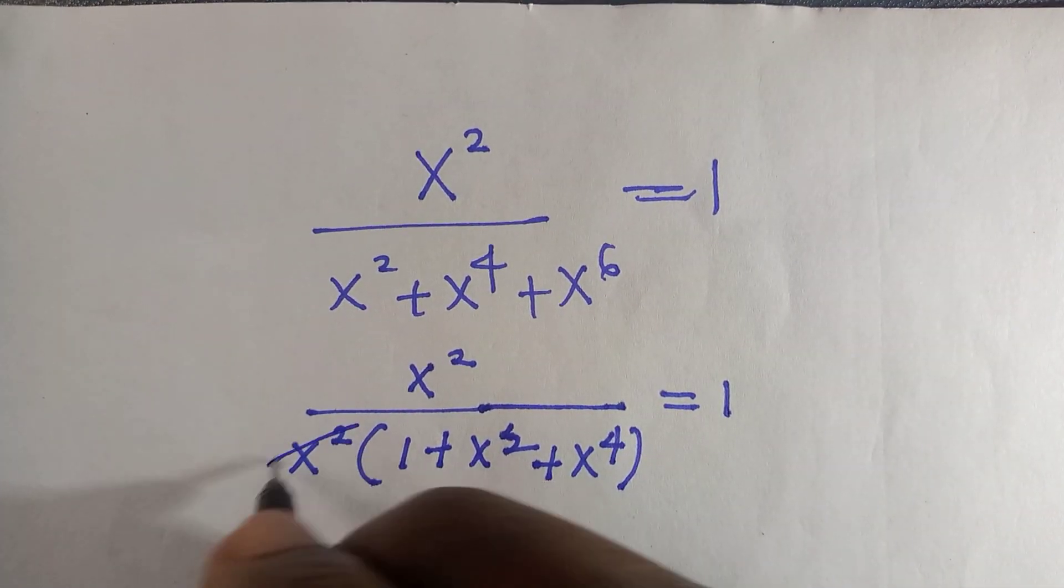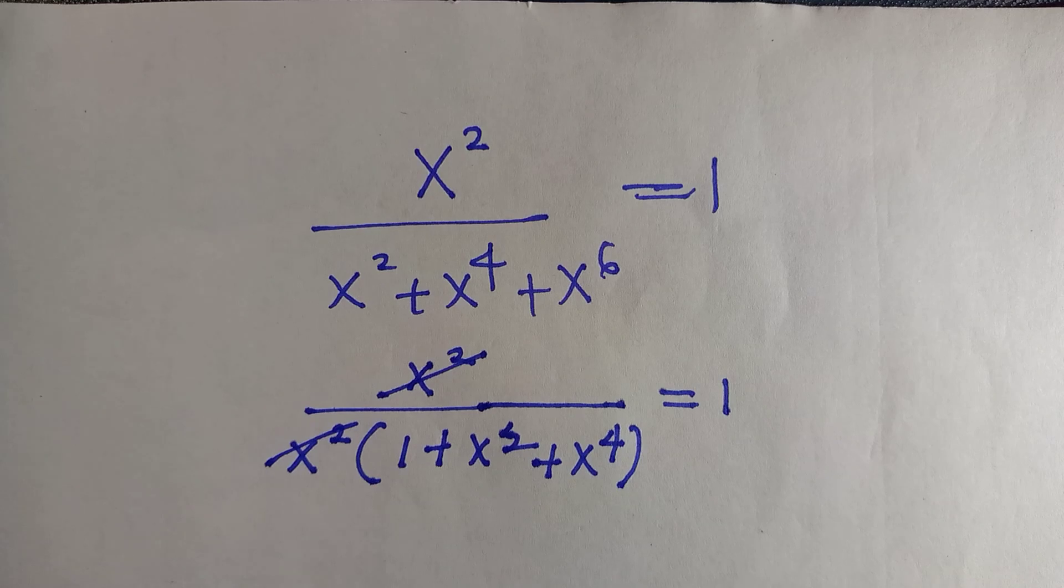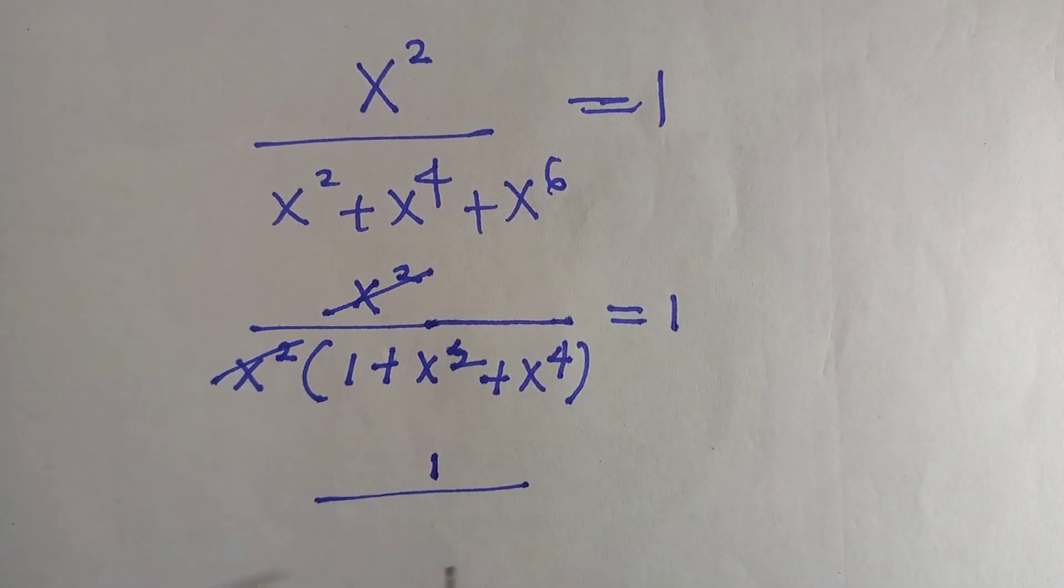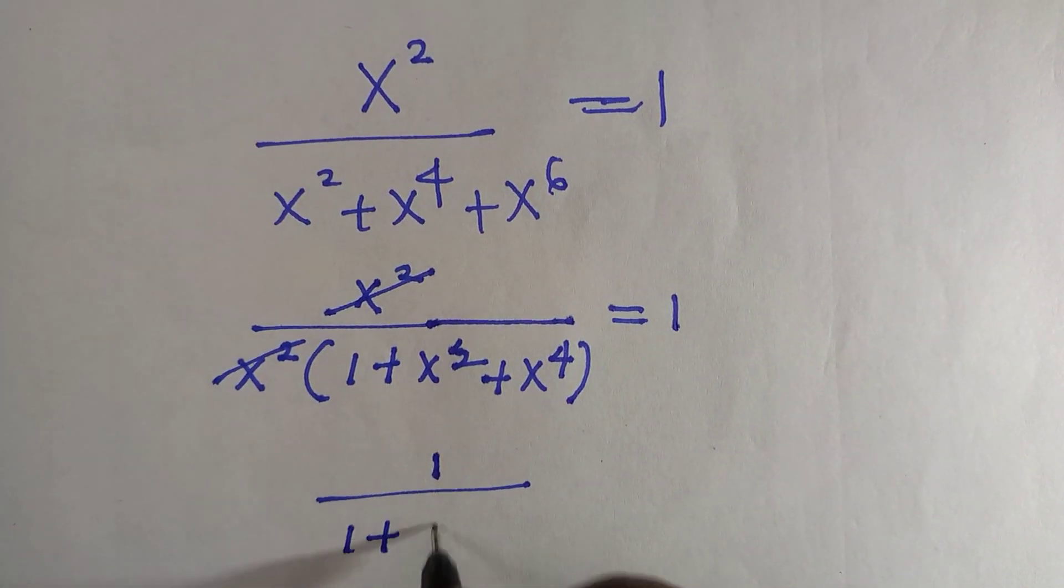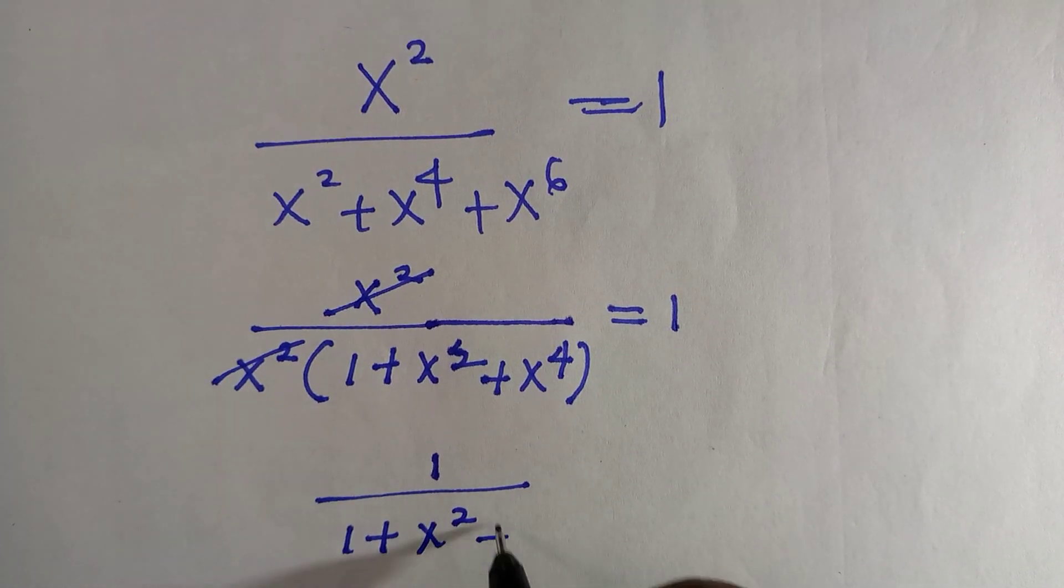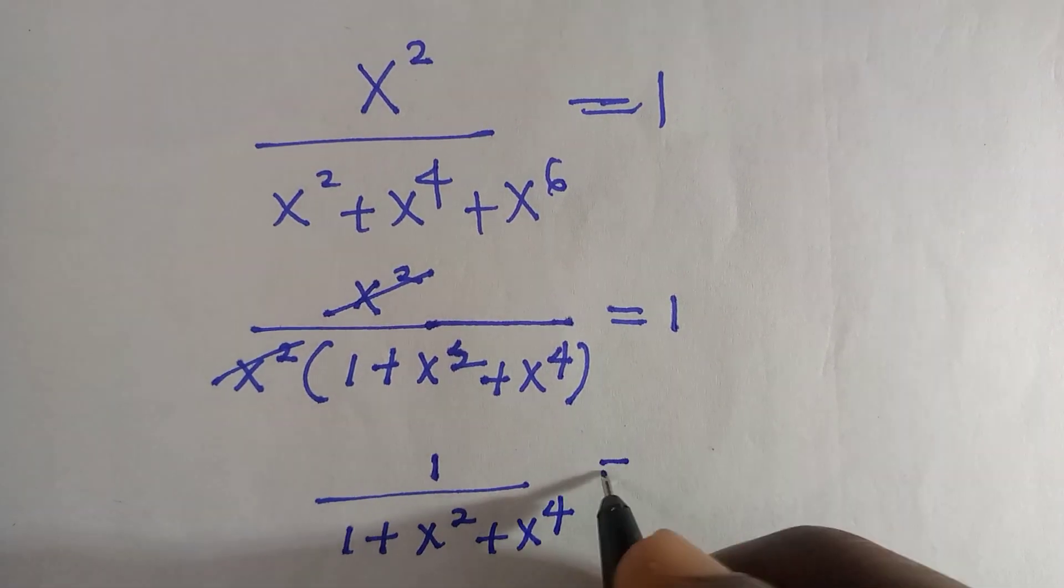And this x squared and x squared can simply delete each other and we have 1 remaining, all over 1 plus x squared plus x raised to power 4 equals 1.